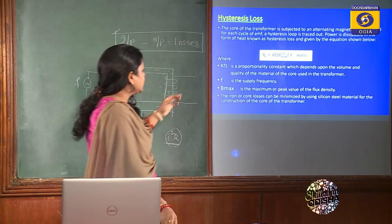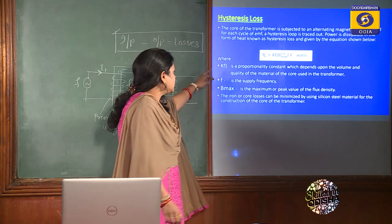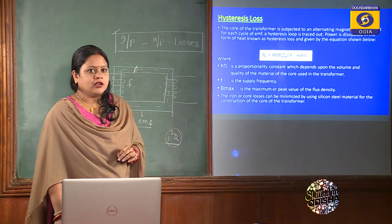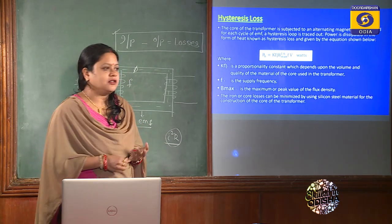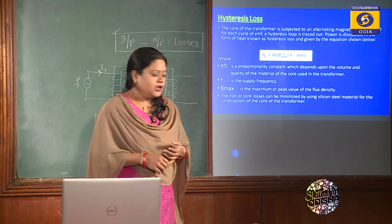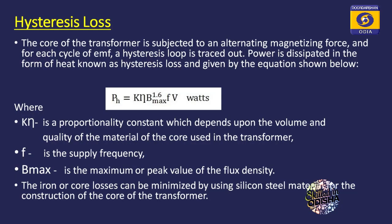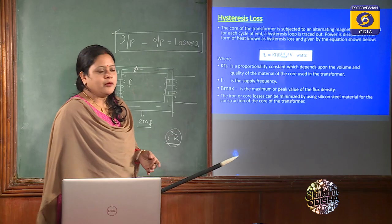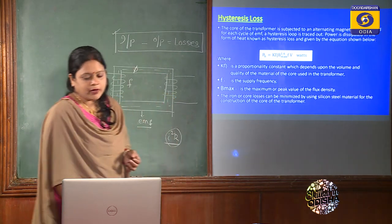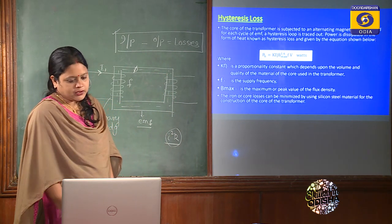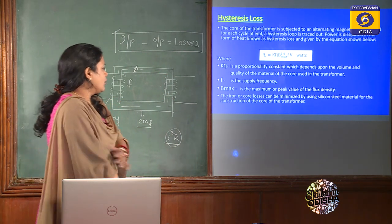The hysteresis coefficient Kη is very small for silicon steel. Therefore, transformer cores generally use silicon steel rather than iron. F is the supply frequency and Bmax is the maximum or peak value of the flux density. Hysteresis loss can be minimized by using silicon steel material for the construction of the core.